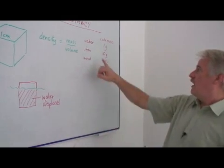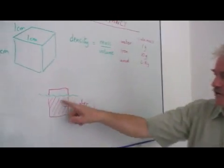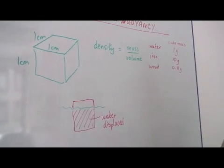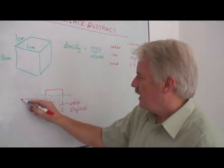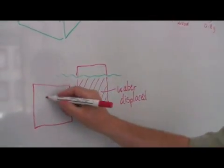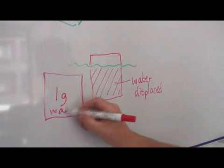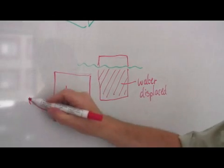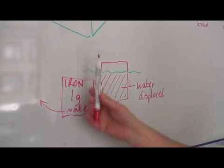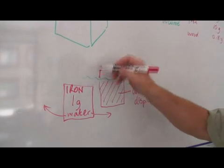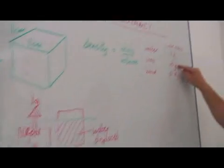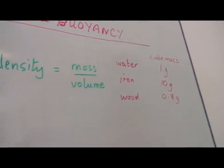If this were iron, this amount of iron would weigh a great deal more than the same weight of water. And even if the iron is totally submerged, the iron is only pushing aside one gram of water. This is an iron object, and one gram of water is pushed aside. Therefore the water pushes up with a force equivalent to one gram pushing up. But unfortunately there's about ten grams pushing down, so that means the iron will sink.